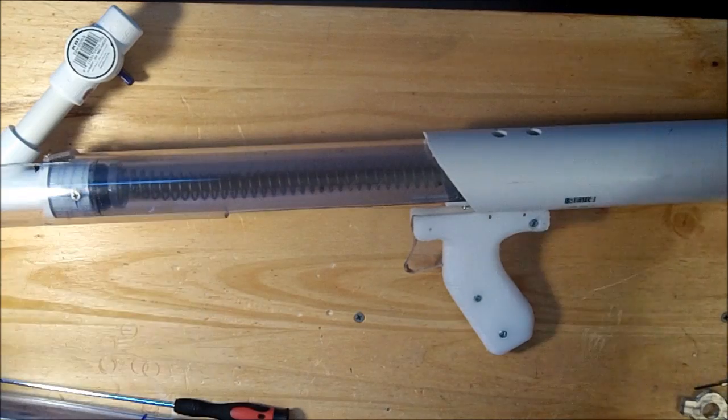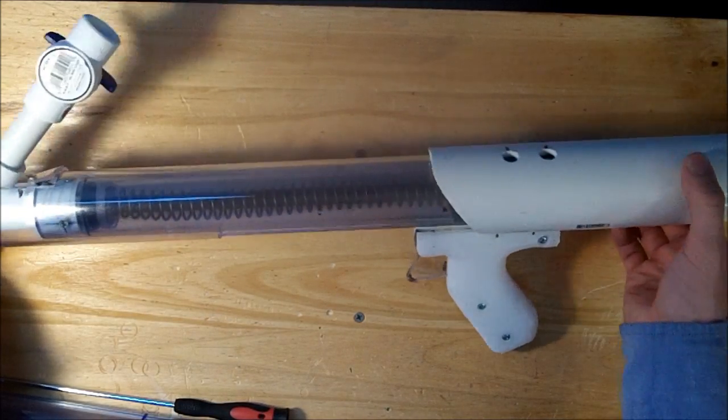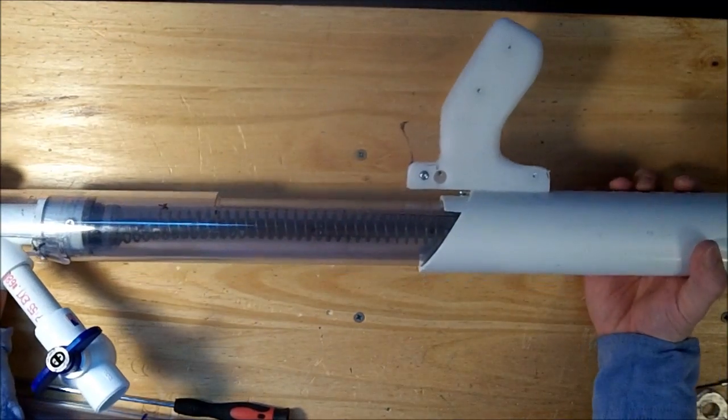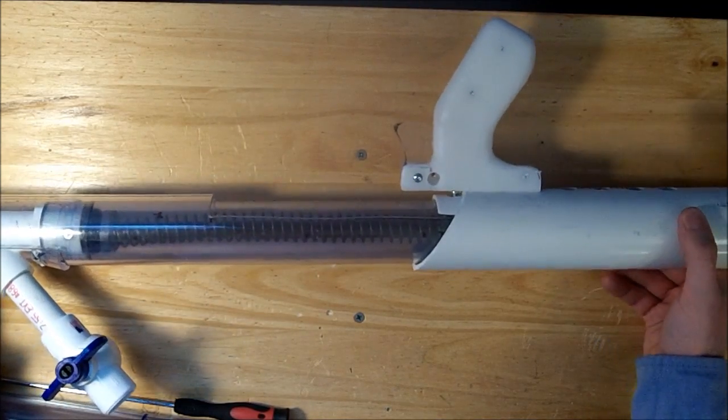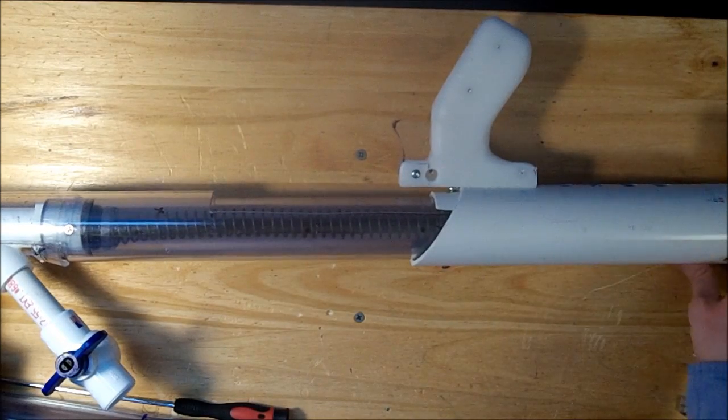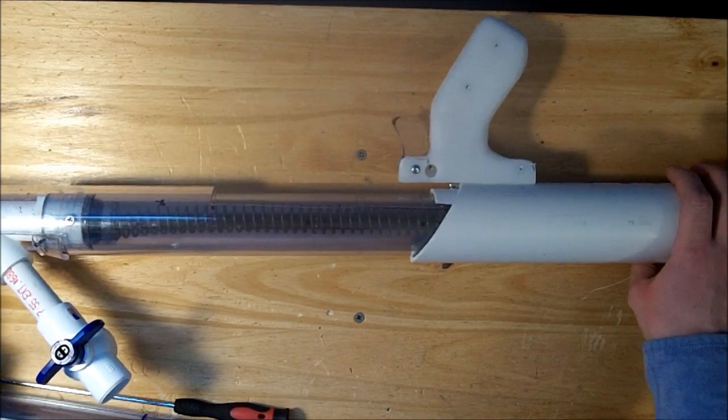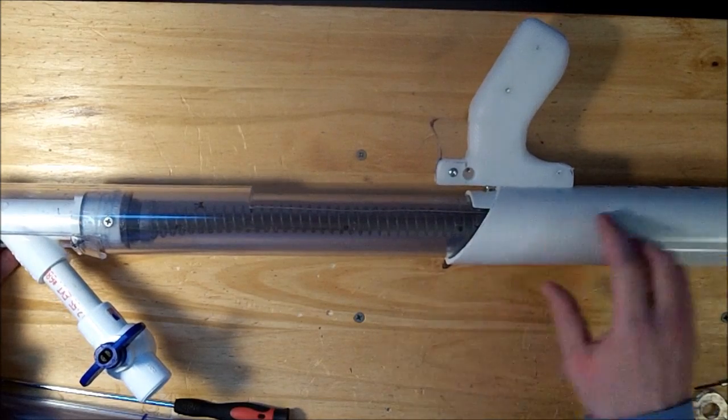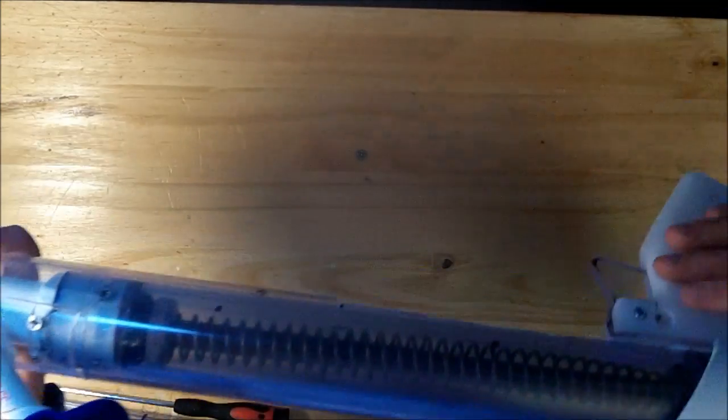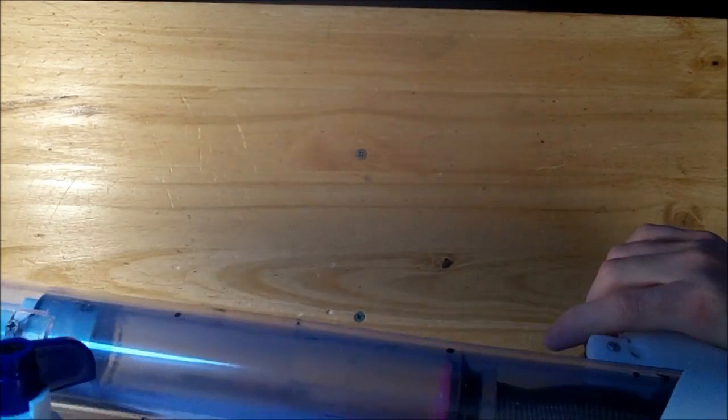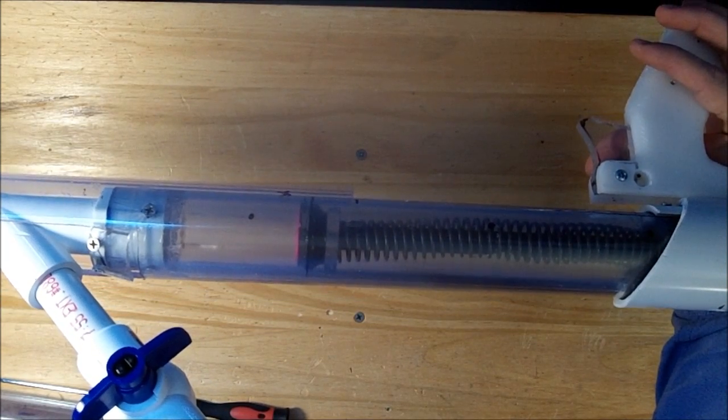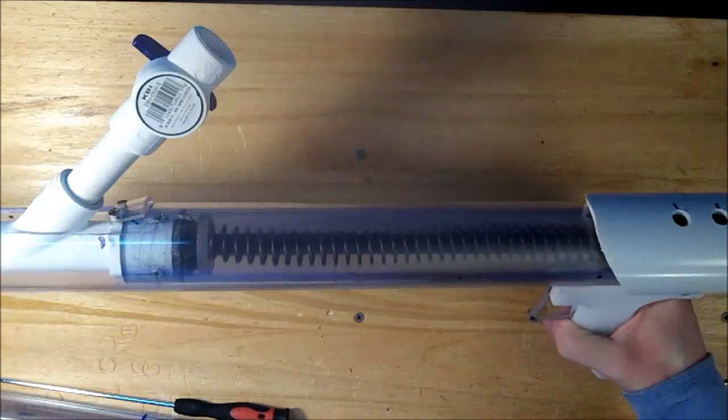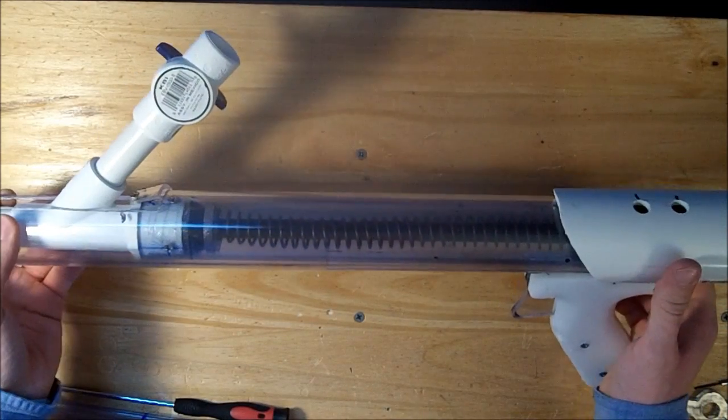So this is homemade version number two, 2.1, whatever you want to call it. Basically designed off of Ryan McNumber's write-up on Nerf Haven. I'll link it below and then I kind of just went my own little way with it. Pretty standard rainbow action contained right here. And just for fun, it is a 100% or nearly perfect air seal.